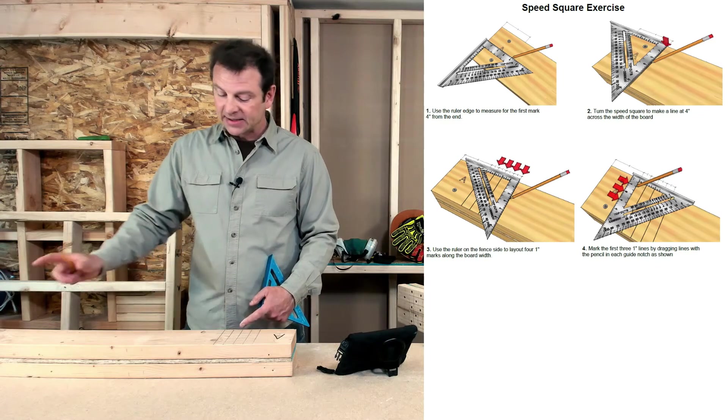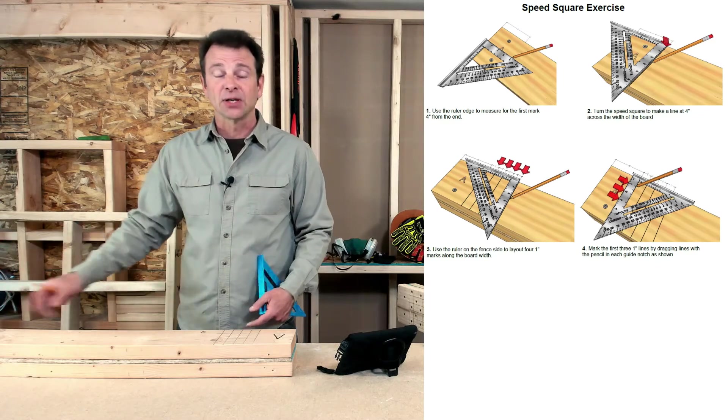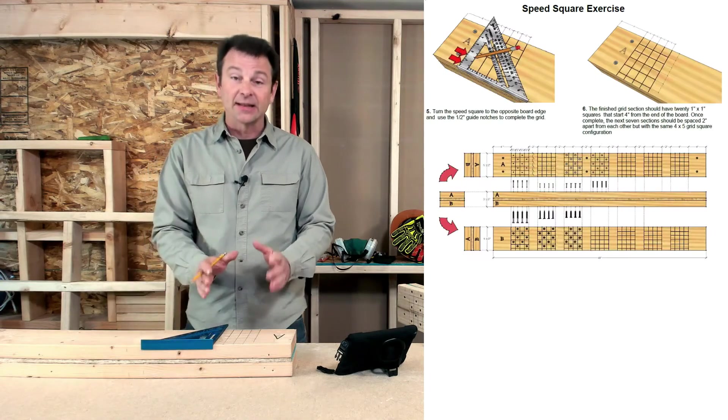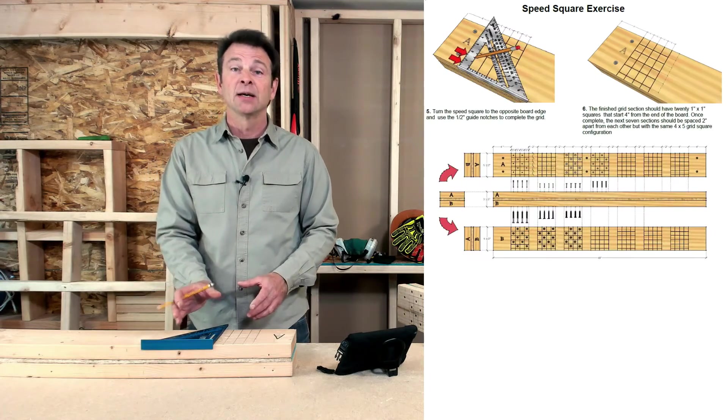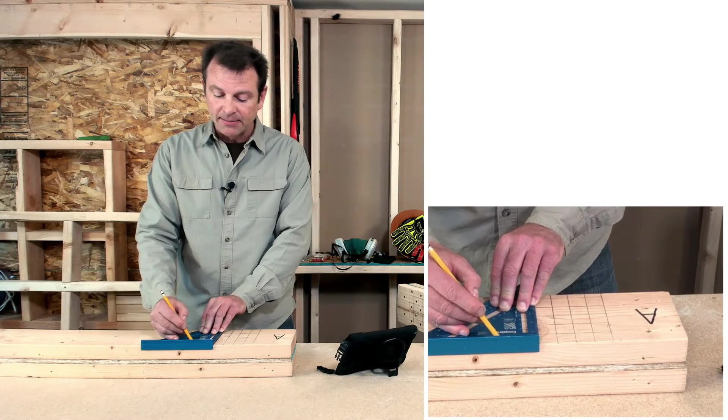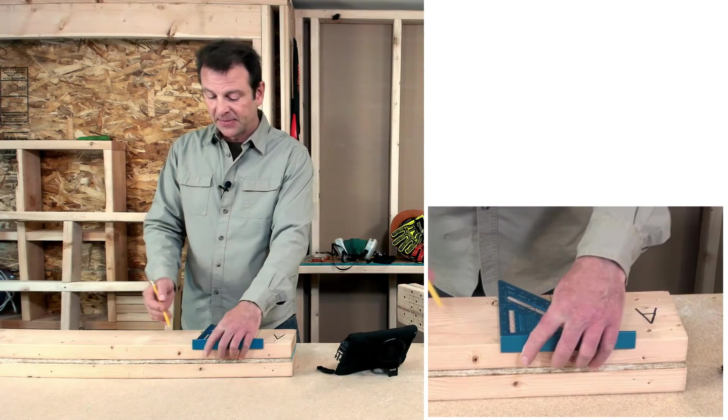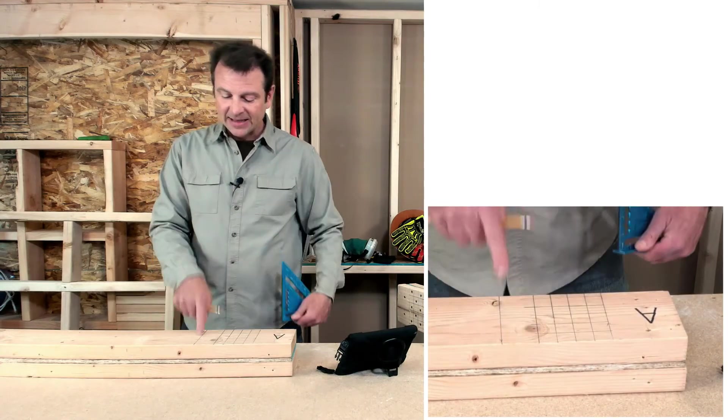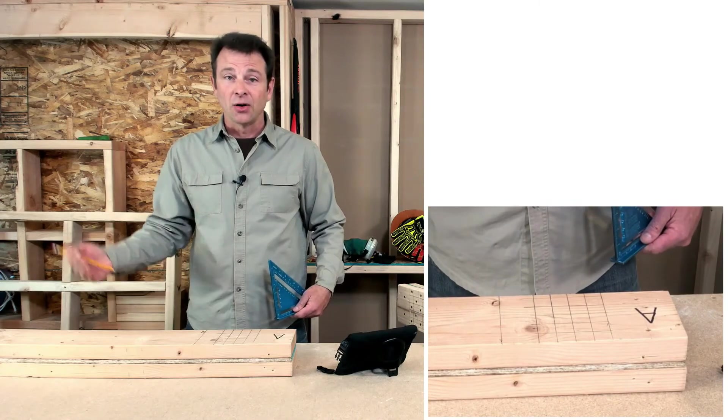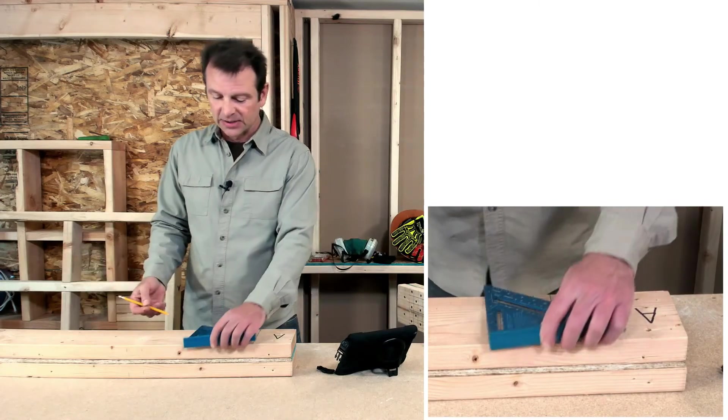You're going to multiply this same grid several times across this board. So the only thing you need to know from here is that the next grid is two inches spaced away from this one. So using my ruler edge here, I'm going to go ahead and mark my two inch space. And when I make that mark, that's going to be the start of my next grid. So I'll go ahead and go through all the steps of marking this next grid continuously.